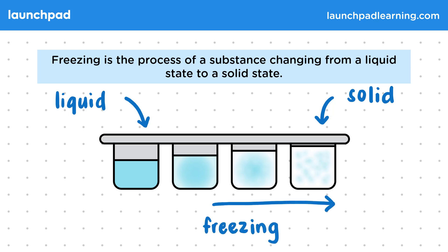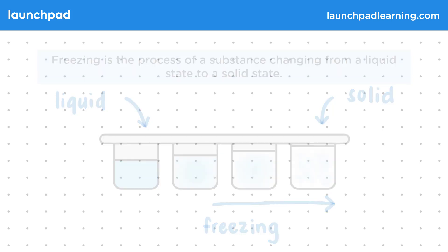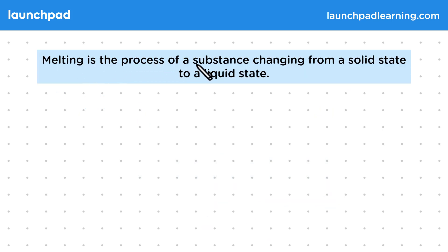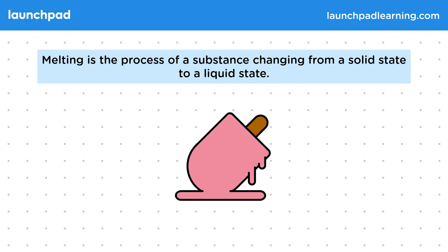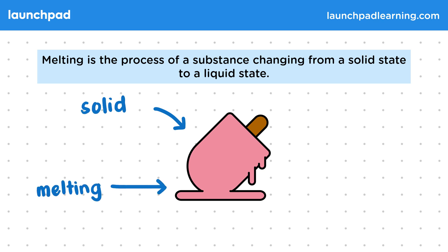So what process is the opposite of freezing? Well, melting is the process of a substance changing from a solid state to a liquid state. For example, think of an ice lolly. An ice lolly starts out as a solid, but when it's left out in the sun, it melts. The solid then turns into a liquid.